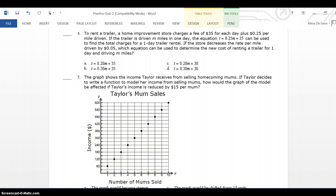To rent a trailer, a home improvement store charges a fee of $35 for each day, plus $0.25 per mile driven. So, if the trailer is driven M miles in one day, the equation can be used to find the total charges for one day trailer rental. So, if the store decreases the rate per mile, I'm decreasing the rate per mile driven by $0.05, which equation can be used to determine the new cost of renting a trailer for one day and driving M miles?